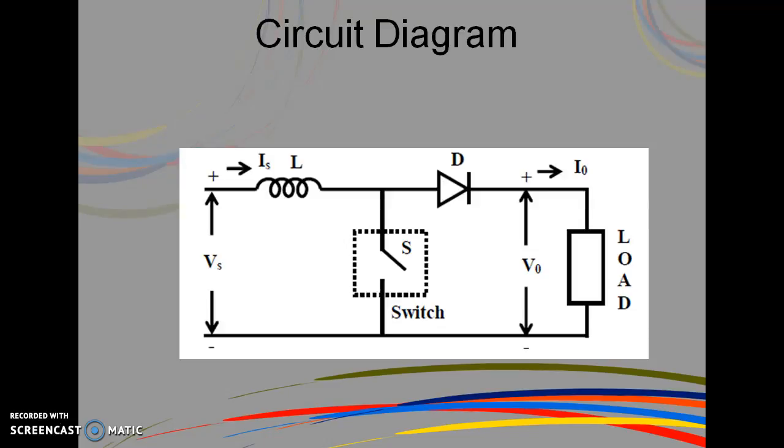The operation of the circuit is explained. First the switch is put on during the time period between zero to T on. In the on period, the output voltage is zero if no battery is connected in series with the load. The load inductance is small. The current from the source flows in the inductance L. The value of current increases linearly with time in this interval.